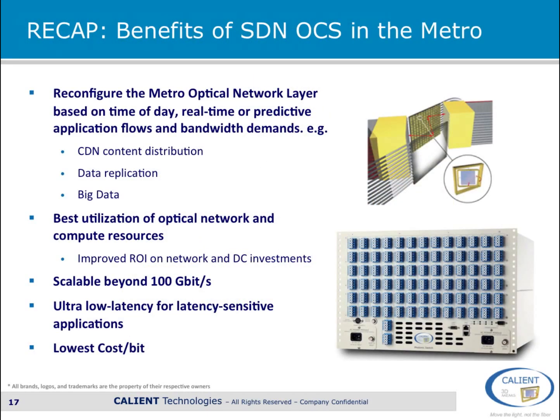To recap, a virtualized optical layer enabled by SDN allows data center and metro networks to be reconfigured on demand to provide capacity where it's most needed at any time. In the metro network, optical layer reconfiguration is particularly important for data replication, web applications, and big data, where very high bandwidth and low latency are required. Finally, virtually unlimited scalability and lowest cost per bit allows service providers to deliver increased bandwidth and new applications in the most cost-effective way.